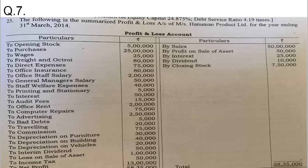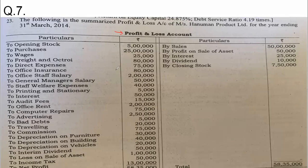The following is the summarized profit and loss account of Measures Hanuman Products Limited for the year ending 31st March 2014. This is a question where a horizontal profit and loss account is already given, and we are supposed to convert this into vertical format — we have to make a vertical income statement.